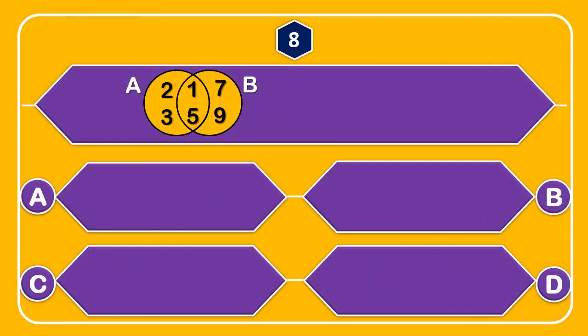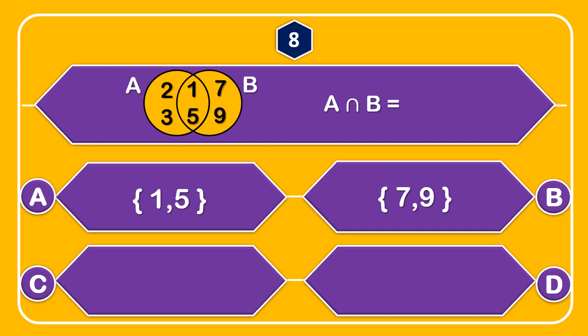Question number 8: If A union B — options: A: set of {1, 5}, B: set of {7, 9}, C: set of {1, 2, 3, 5, 7, 9}.